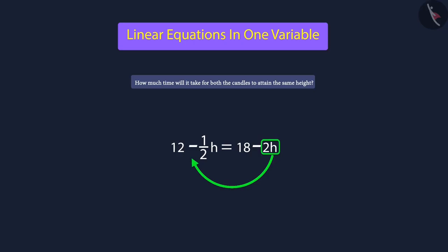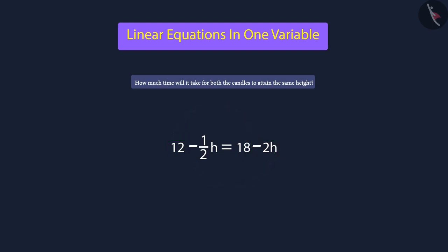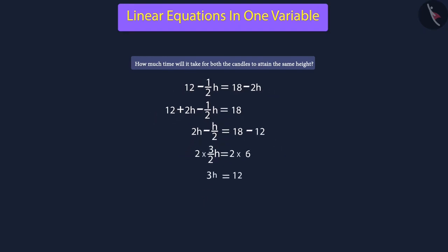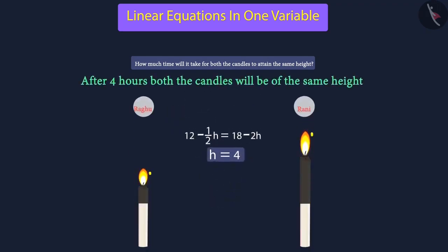Let us put the terms with the variable H to the left of the equation and move all the constants to the right side. So, when we move the negative 2H to the left, it will become positive 2H. Next, we move 12 to the right side, so it becomes negative 12. After subtracting these two terms, we get the simplified equation. Since 3/2 is multiplied by H, we multiply both sides by 2 to remove the denominator. Then we divide both sides by 3 to remove the 3 with variable H. The value of H is found as 4, which means after 4 hours, both candles will be of equal height.